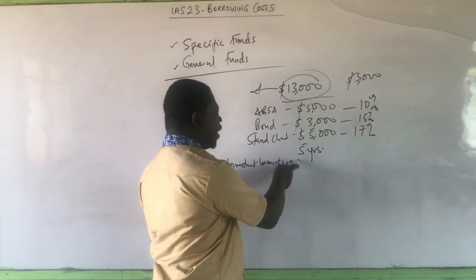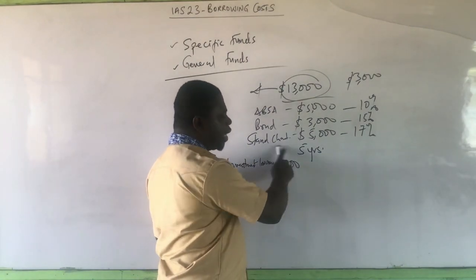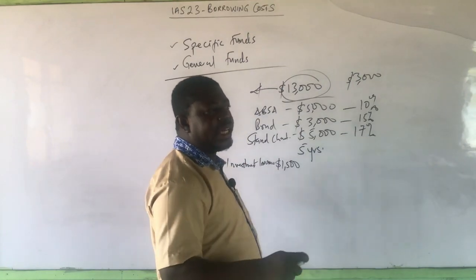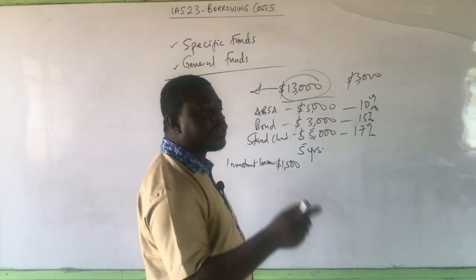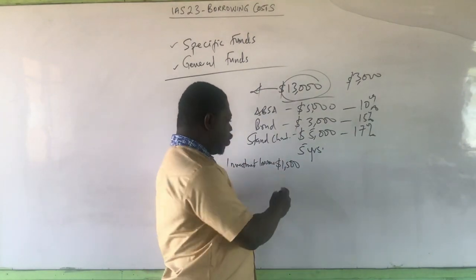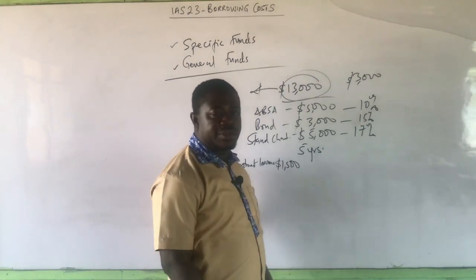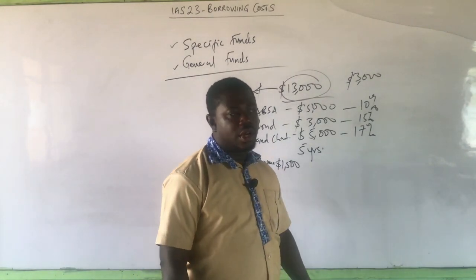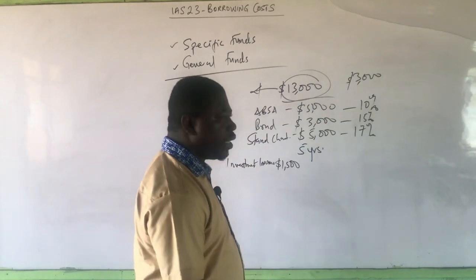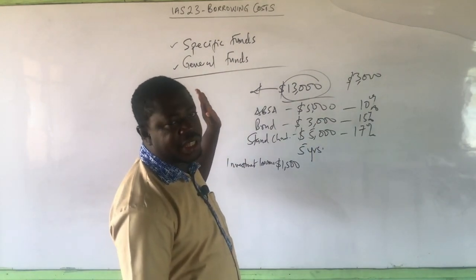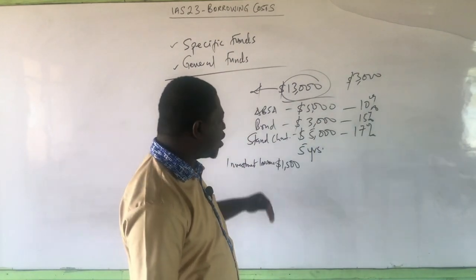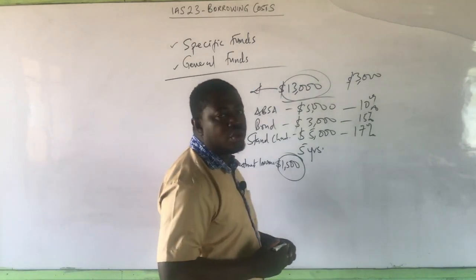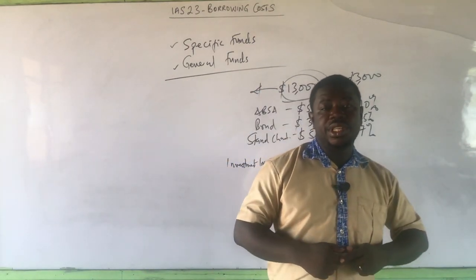Mind you, that $1,500 is income for two years. So if you are asked to calculate borrowing cost for one year, you need to amortize this investment income. It will come in like a discount on the borrowing cost — just as we look at amortization of discounts and premiums. This comes in like a discount to the borrowing cost. We have to reduce the borrowing cost by any investment income thereby.